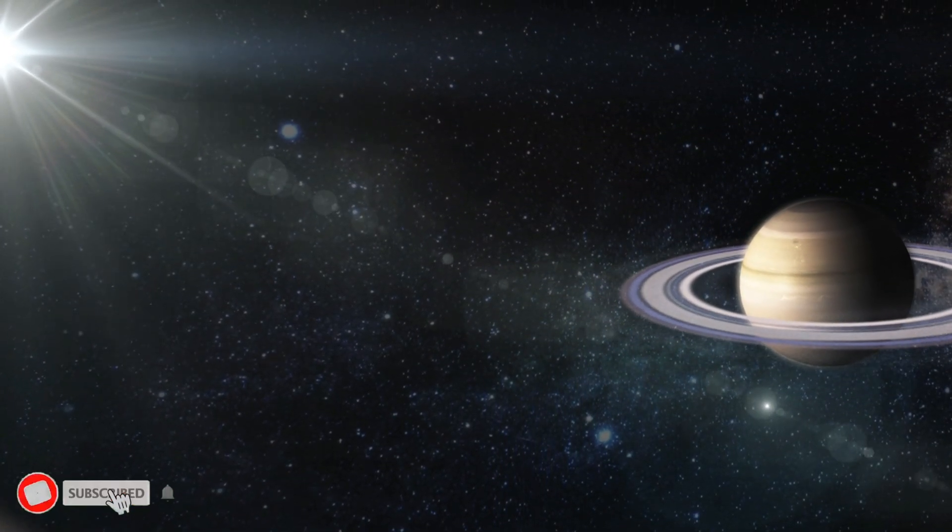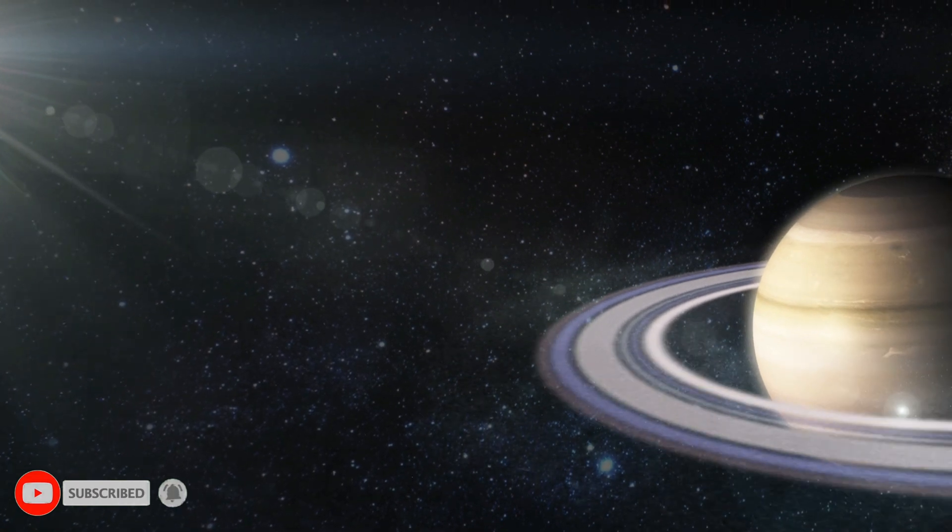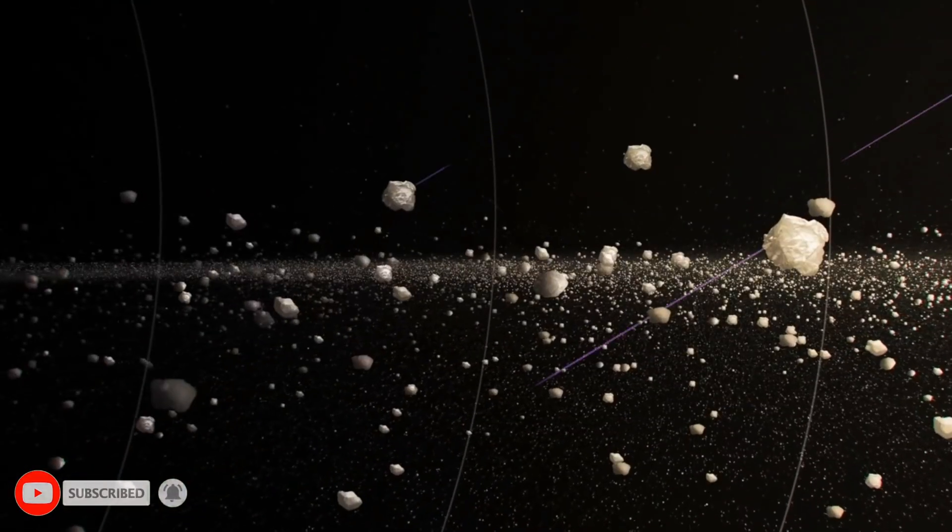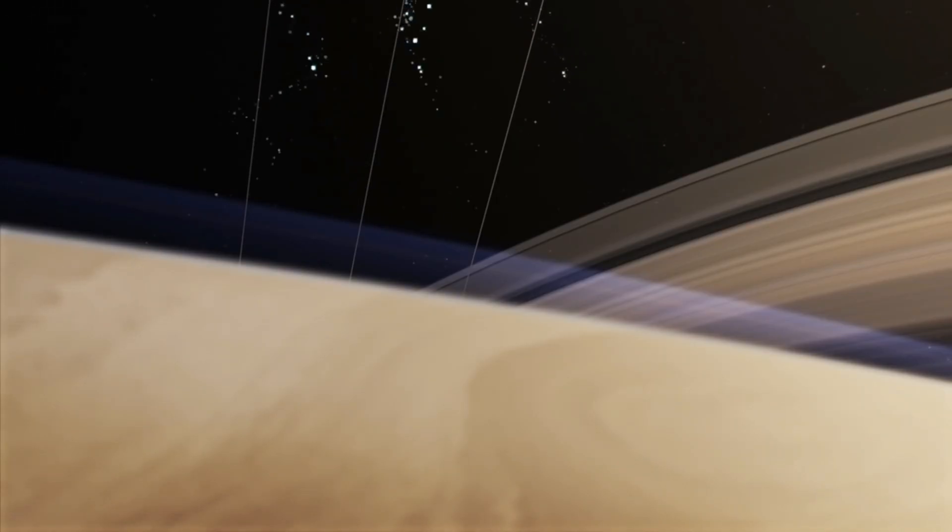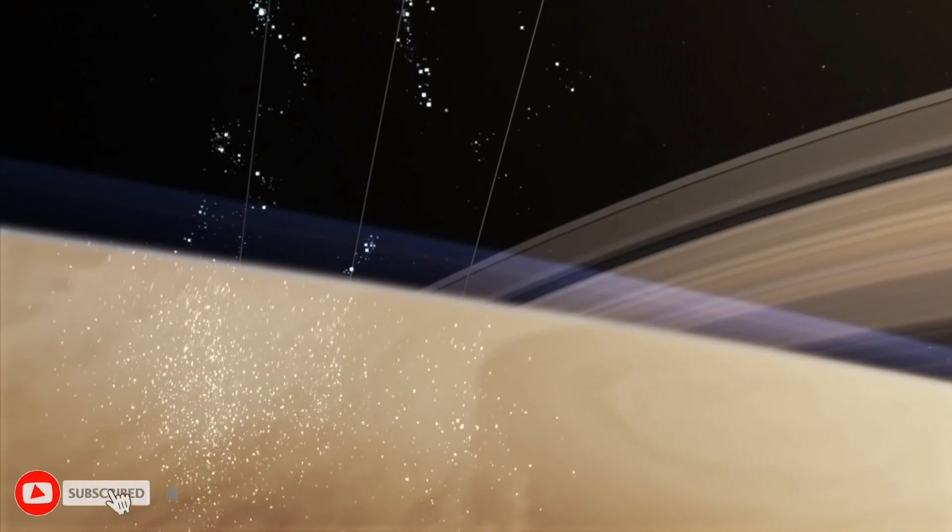NASA has warned that Saturn is losing its rings at the worst possible rate, and that they'll eventually disappear completely. The rings are mostly made of water ice and are being sucked into the planet by gravity.